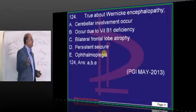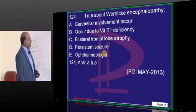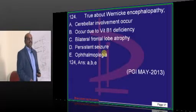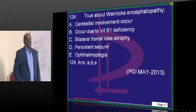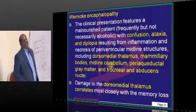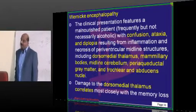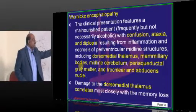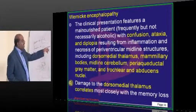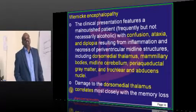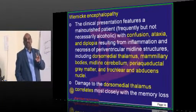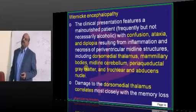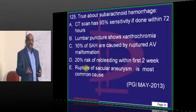In Wernicke's encephalopathy, there is cerebellar involvement, vitamin B1 deficiency, ophthalmoplegia, and confabulation. There will be no seizures. The structures that suffer atrophy include the dorsomedial part of the thalamus, hemorrhagic lesions in mammillary bodies, midline of the cerebellum, periaqueductal gray matter, and the trochlear and abducens nuclei — hence diplopia occurs. The triad of clinical features is confusion, ataxia, and diplopia.